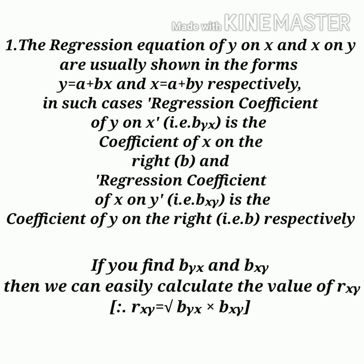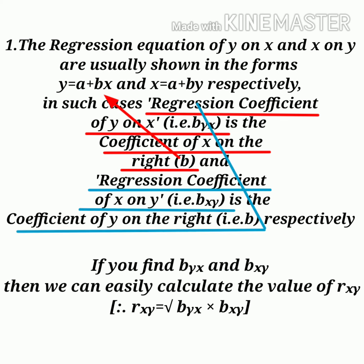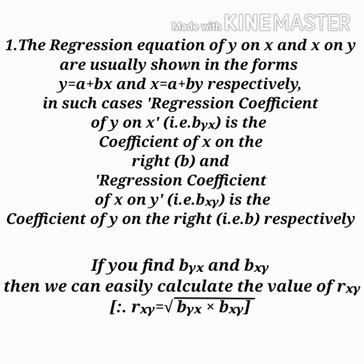The regression equation of y on x and x on y are usually given in the forms y = a + bx and x = a + by respectively. In such cases, it is not difficult to find out the regression coefficient. The regression coefficient of y on x, denoted by byx, is the coefficient of x on the right — that is b for the equation y = a + bx. The regression coefficient of x on y, denoted by bxy, is the coefficient of y on the right — that is b for the equation x = a + by. If we find byx and bxy, then we can easily calculate the value of rxy, the correlation coefficient between x and y.